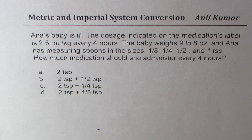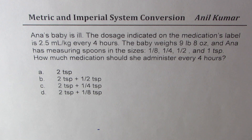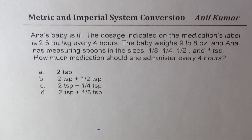The question here is: Anna's baby is ill. The dosage indicated on the medication label is 2.5 milliliters per kg every 4 hours. The baby weighs 9 pounds and 8 ounces, and Anna has measuring spoons in the sizes 1/8th, 1/4th, 1/2, and 1 teaspoon. How much of these medications should she administer every 4 hours?